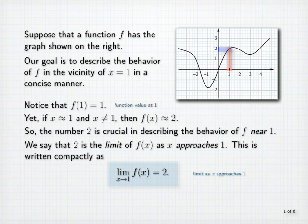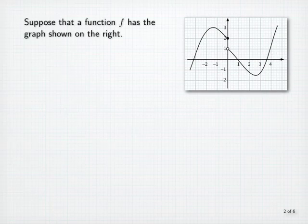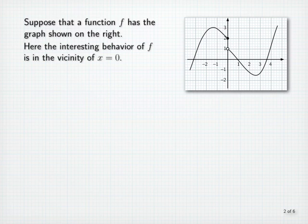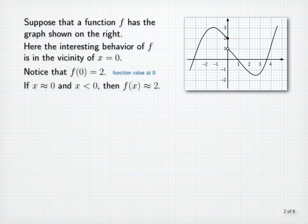Let's look at another example. Again, suppose that f is the function whose graph is shown on the right. Here the interesting behavior of the function is in the vicinity of x equals 0. Let's first notice that the value f of 0 is equal to 2. If x is close to and less than 0, then f of x is close to 2. In fact, the closer x is to 0 while x is less than 0, the closer f of x is to 2.